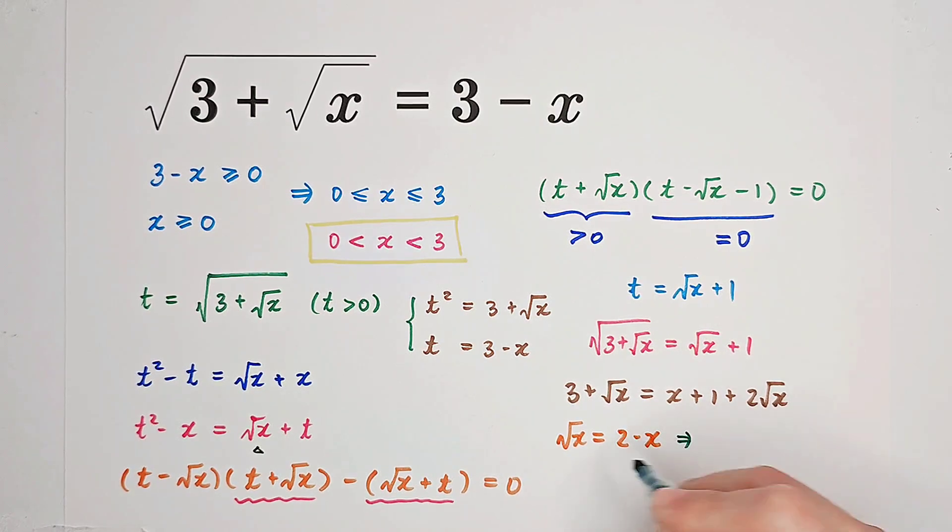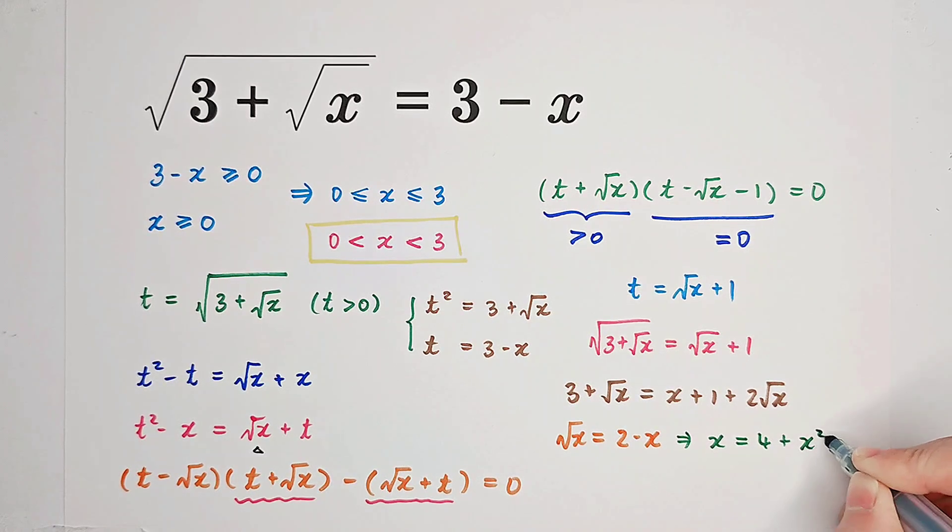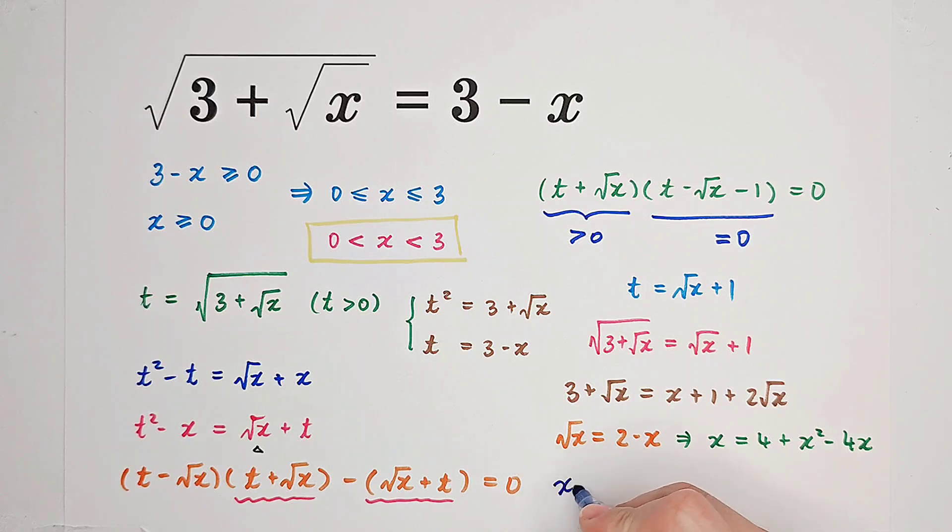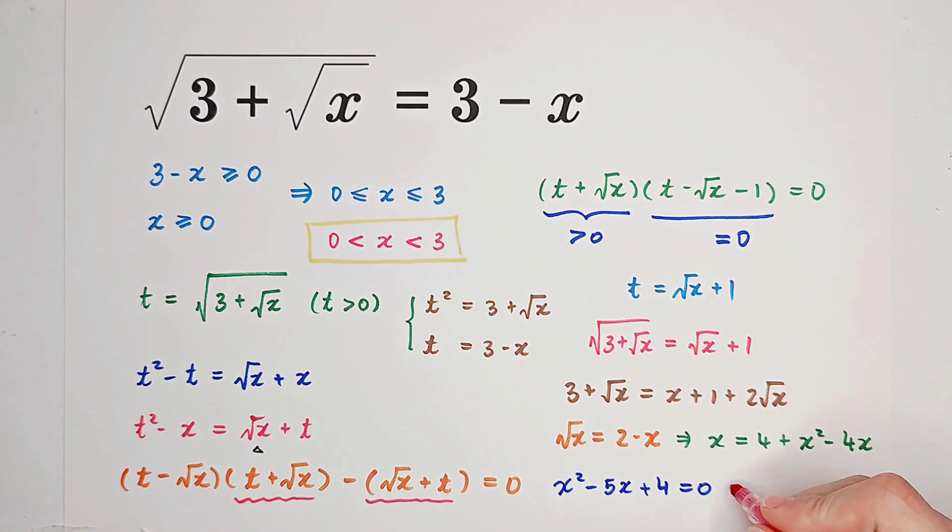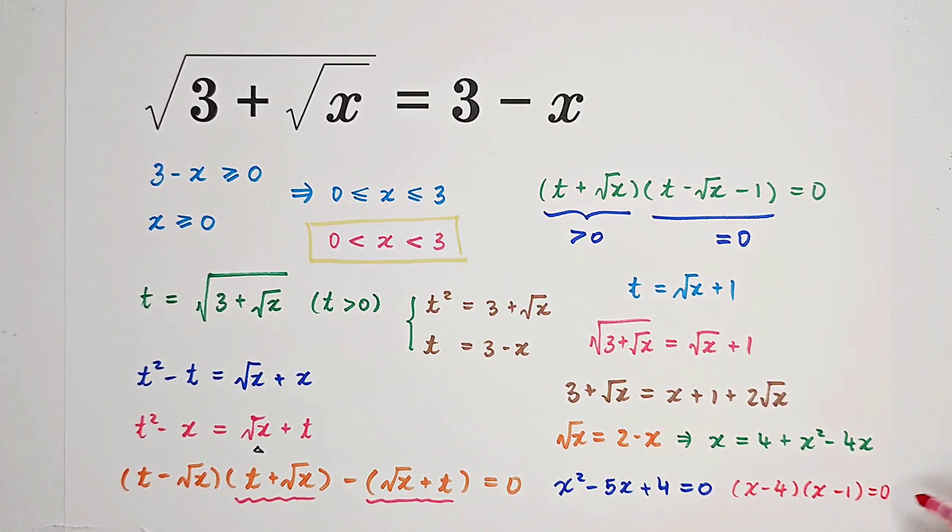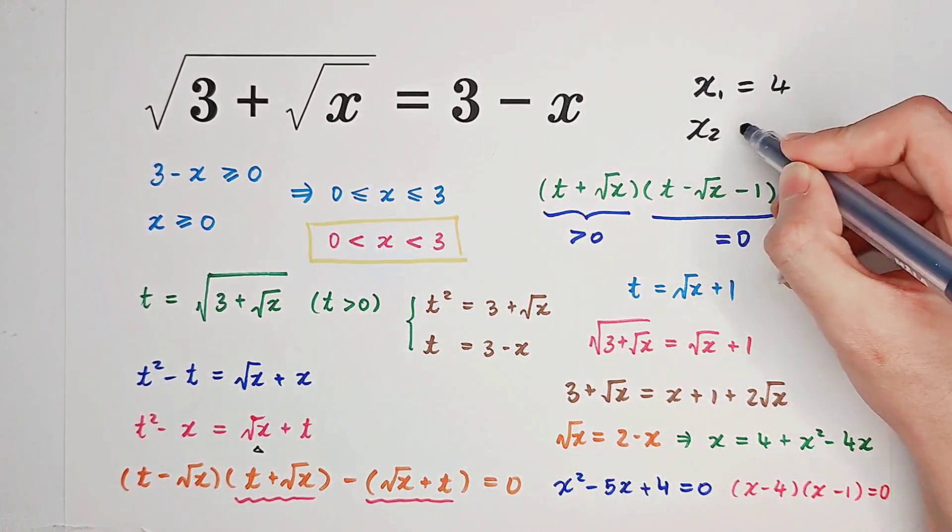And from this equation, if we square both sides, we get x equals 4 plus x squared minus 4x. So x squared minus 5x plus 4 equals 0. And the left hand side can be factorized. It is x minus 4 times x minus 1 equal to 0. So we get two solutions. x1 is 4 and x2 is 1.